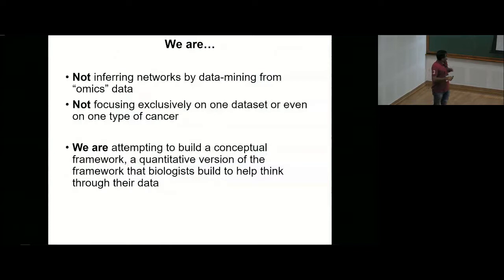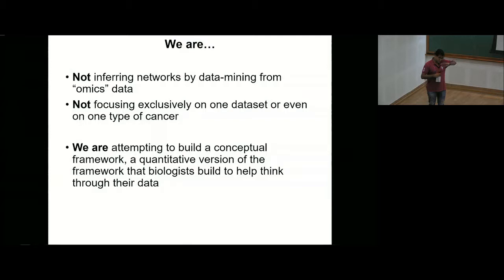To be clear about what I'm not going to talk about: this is not a bioinformatics talk — I'm not going to infer networks — nor is it a cancer biology talk about a particular type of cancer. What I'm trying to do is look at a more generic picture of what networks allow this phenotypic plasticity seen across different cancers and identify some of those underlying organizing principles.